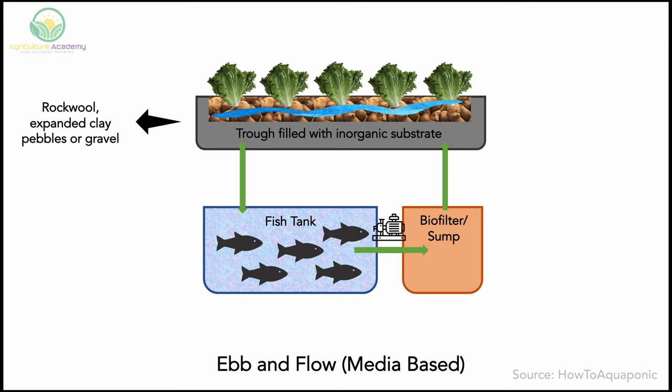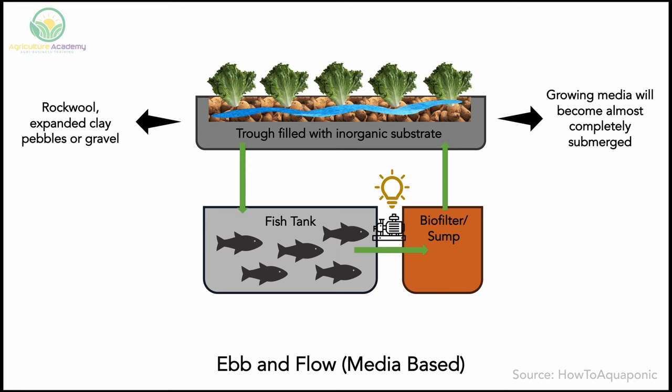You will also need your fish tank and biofilter system as described for the NFT system, and a pump ideally with a backup battery system. The most efficient setup will consist of a fish tank at the base over which your trough of growing media and plants is placed. A pump will deliver water into the overlying trough so that the growing media is almost completely submerged. The water will then passively return to the tanks below through the siphon valve.